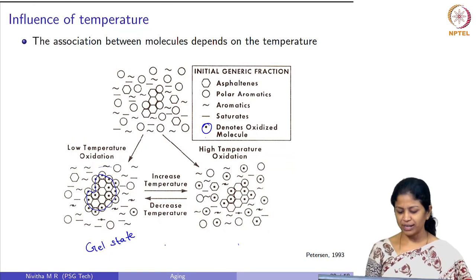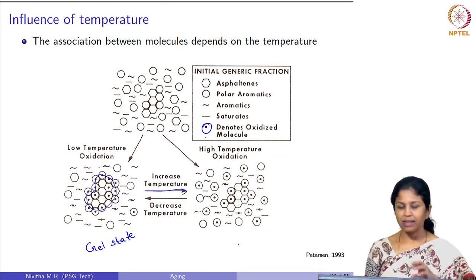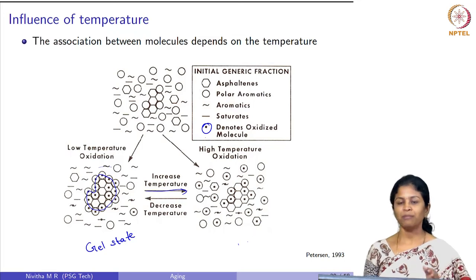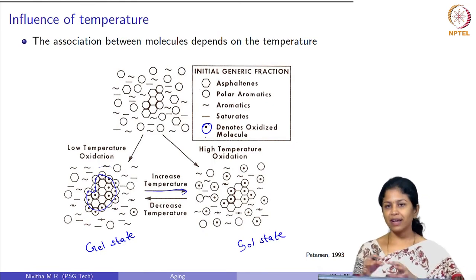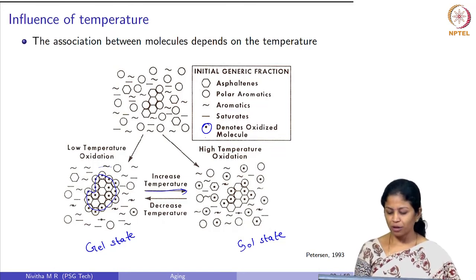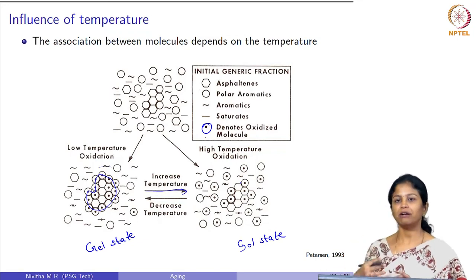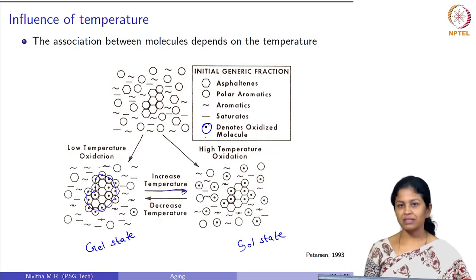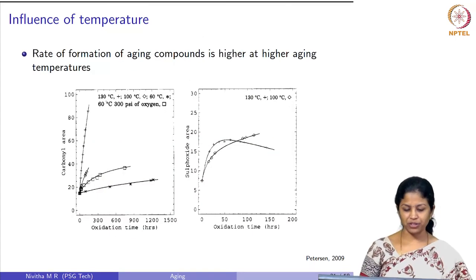As temperature increases, the associations are broken down and the material moves from a gel state to a sol state. In the sol state, the materials are dispersed, giving more molecules the tendency to get oxidized. Because of this, oxidation is very rapid at high temperatures compared to low temperatures, and this has been verified experimentally for bitumen.